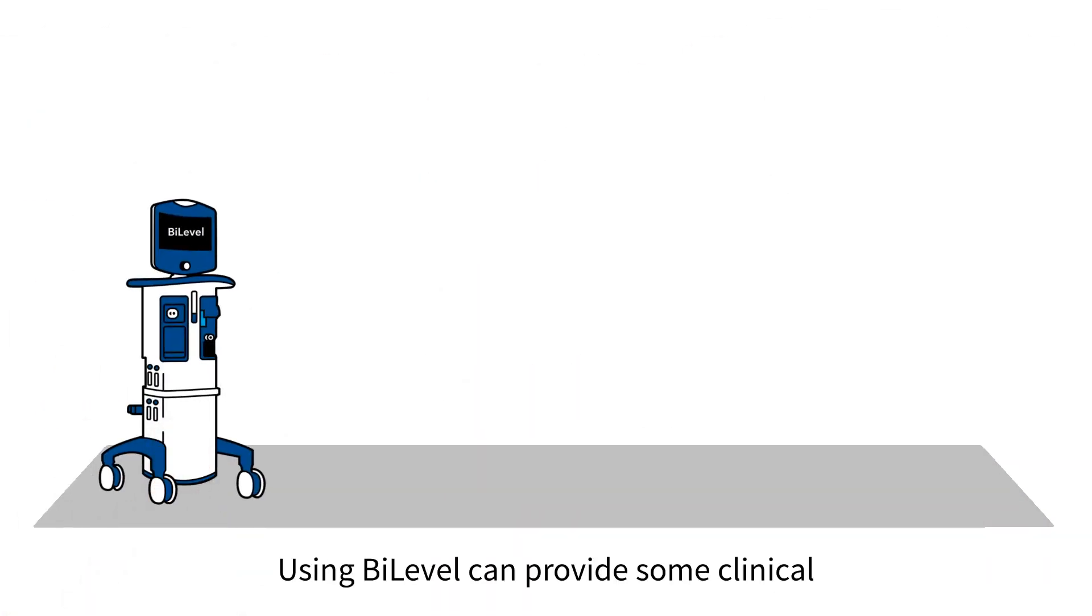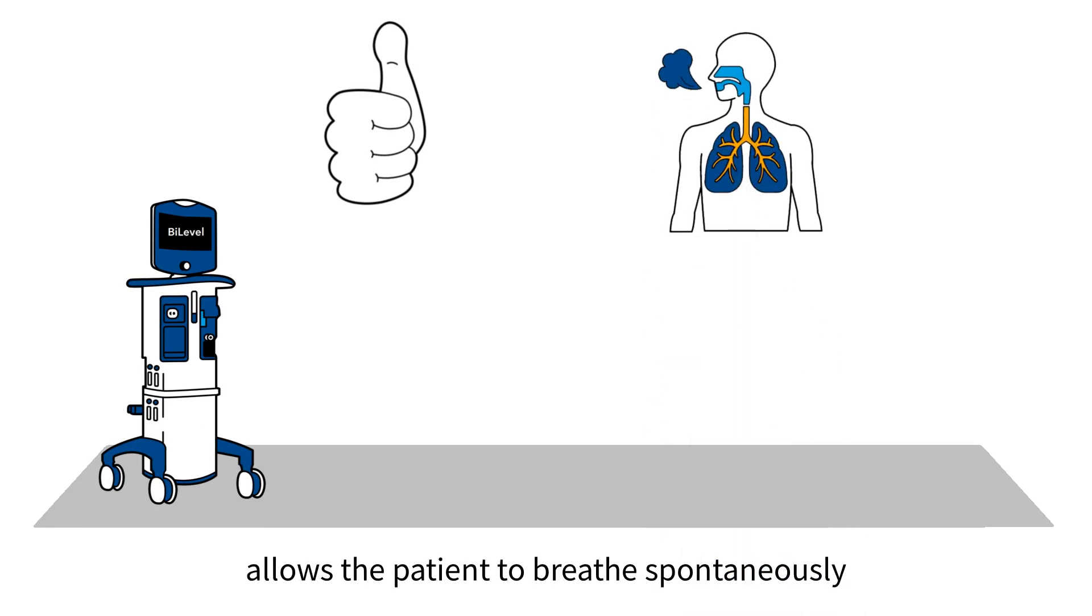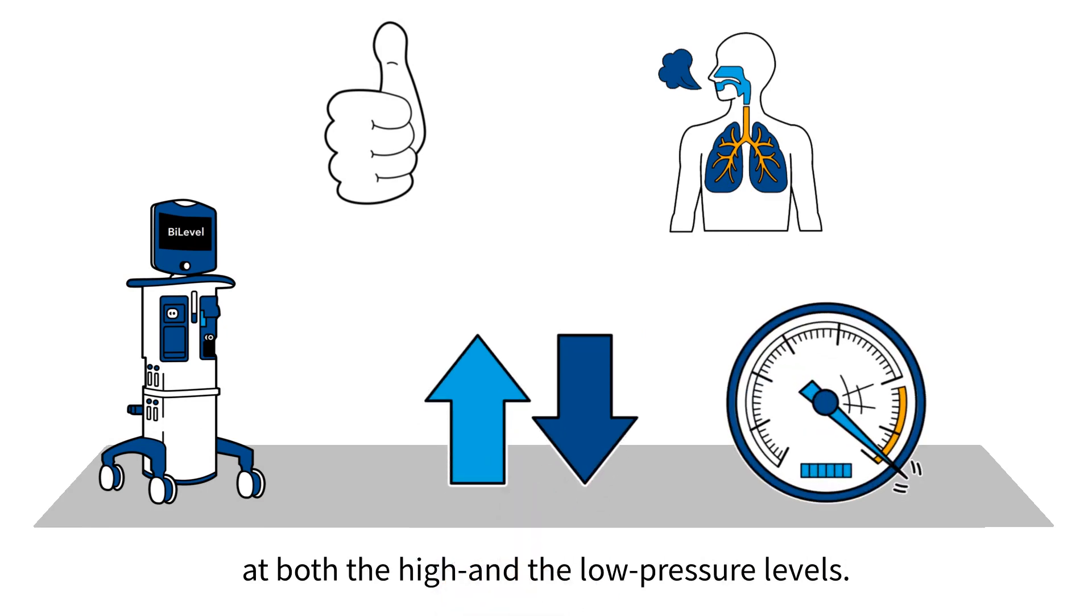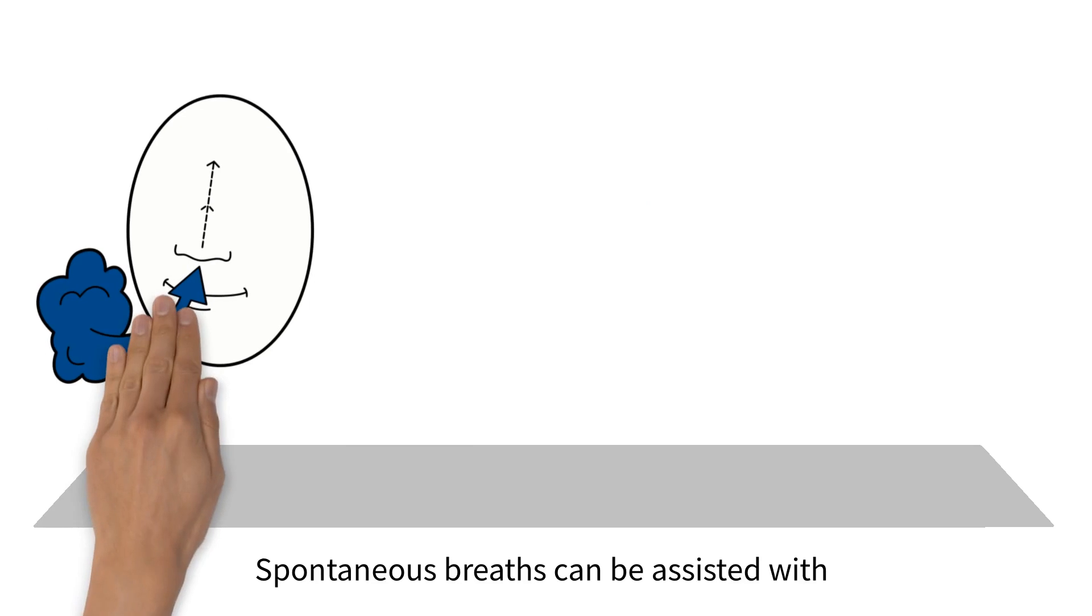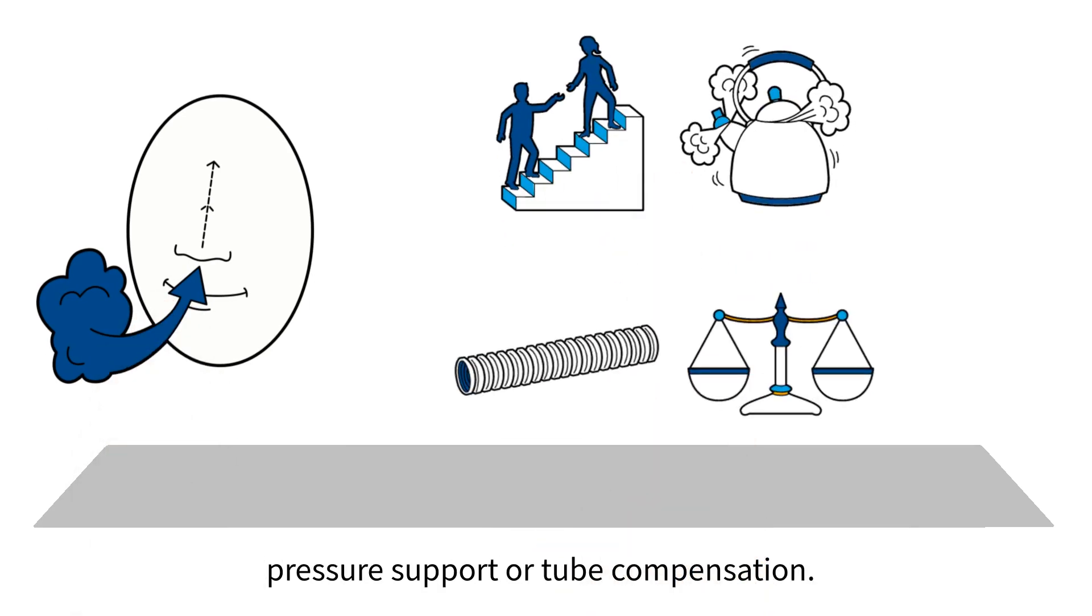Using Bi-level can provide some clinical benefits for your patient. The active exhalation valve allows the patient to breathe spontaneously at both the high and the low pressure levels. Spontaneous breaths can be assisted with pressure support or tube compensation.